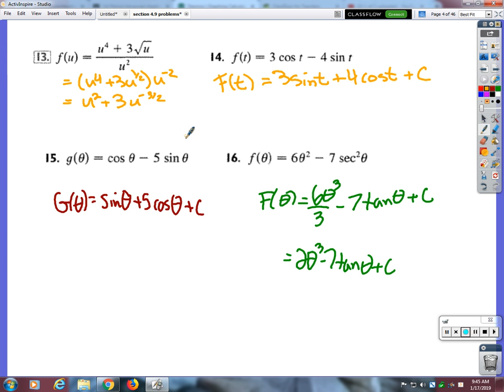Okay, so the anti-derivative of that is... okay, plus 3u to the negative one-half over negative one-half plus c.